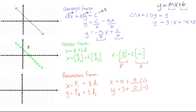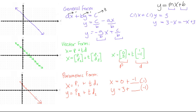If t equals 0, the point is (0, 3). If t equals 1, x is 1 and y is 2. If t equals 2, x is 2 and y is 1. If t equals negative 1, x is negative 1 and y is 4. We're getting exactly the same line as before. There you have it — three different ways to write the equation for exactly the same line.